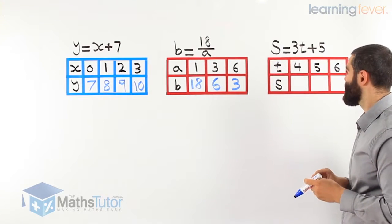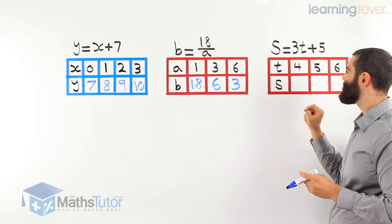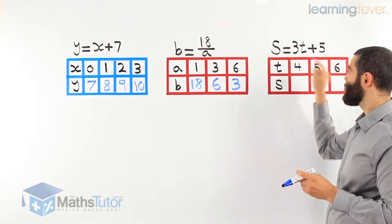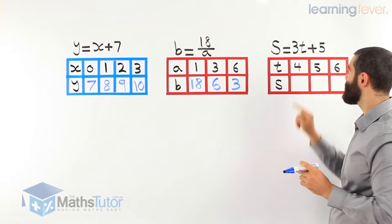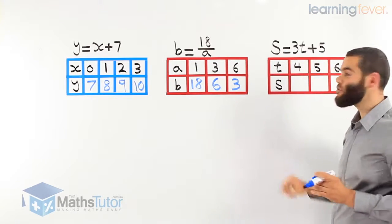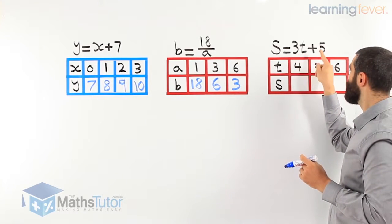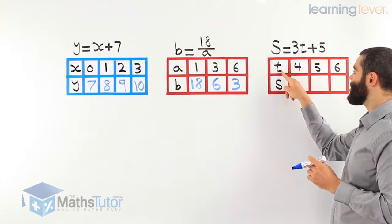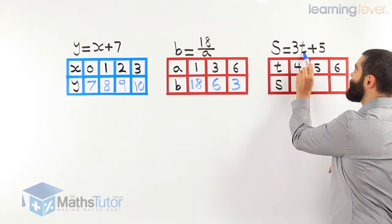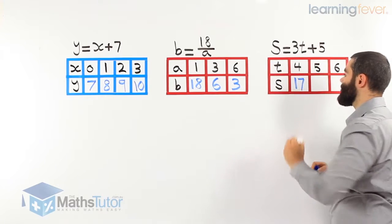Last one, the table of values has a t and an s. The t is going to be replaced with 4, 5, and 6. The rule says s is going to be equal to 3 times t plus 5. We learn in algebra that 3t means 3 times t. So 3 times t plus 5. t for the first one is going to be replaced with 4. 3 times 4 is 12, 12 plus 5 equals 17.